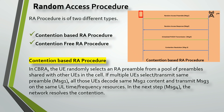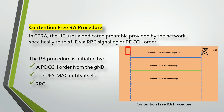Now moving to the second type: Contention Free RA procedure. In CFRA, the UE uses a dedicated preamble which is provided by the network via RRC signaling and the PDCCH order. So unlike CBRA, the preamble is not randomly selected — it is already provided by the network.